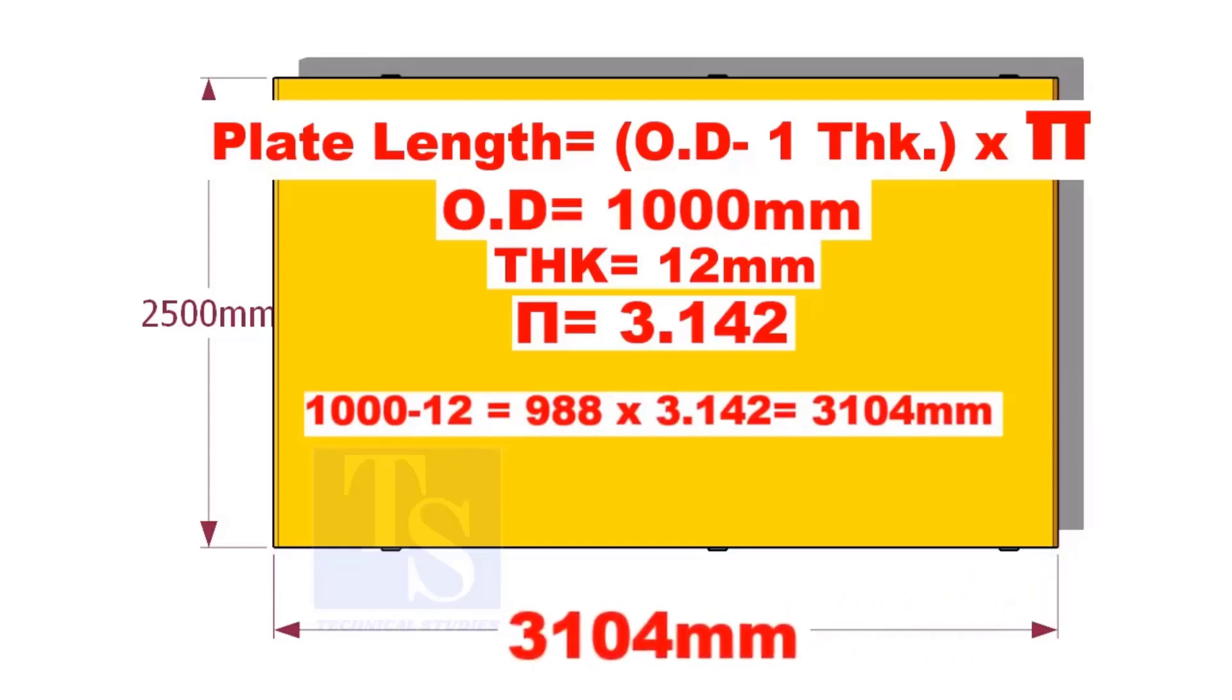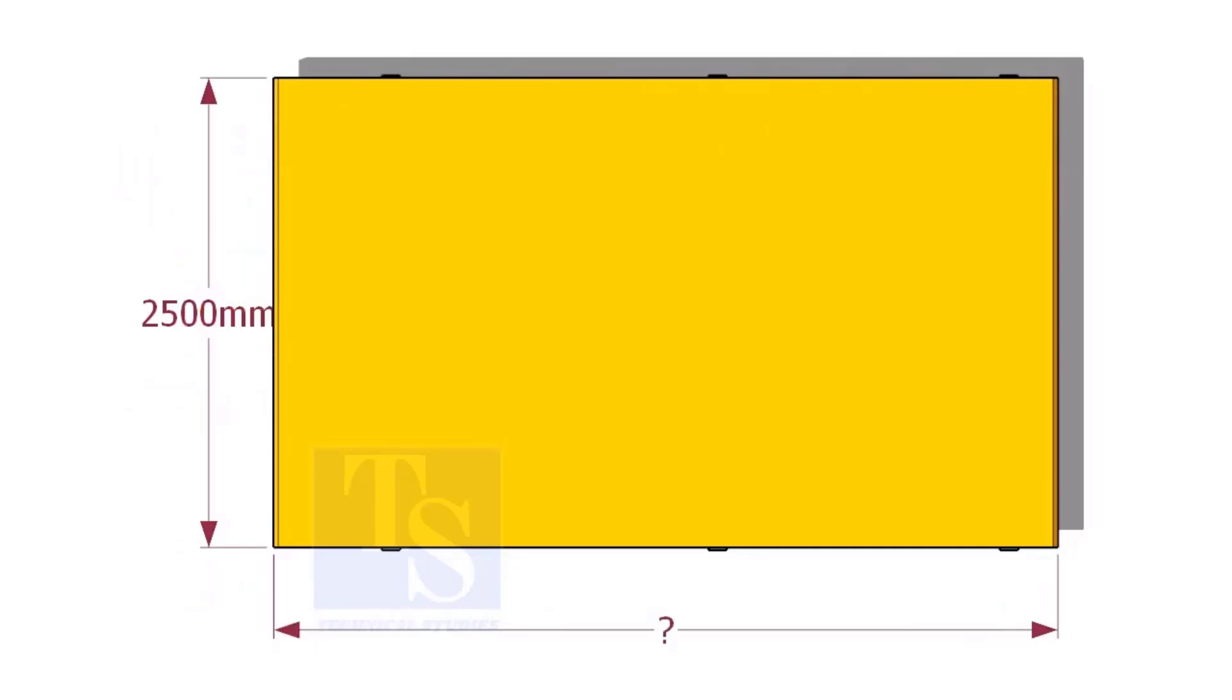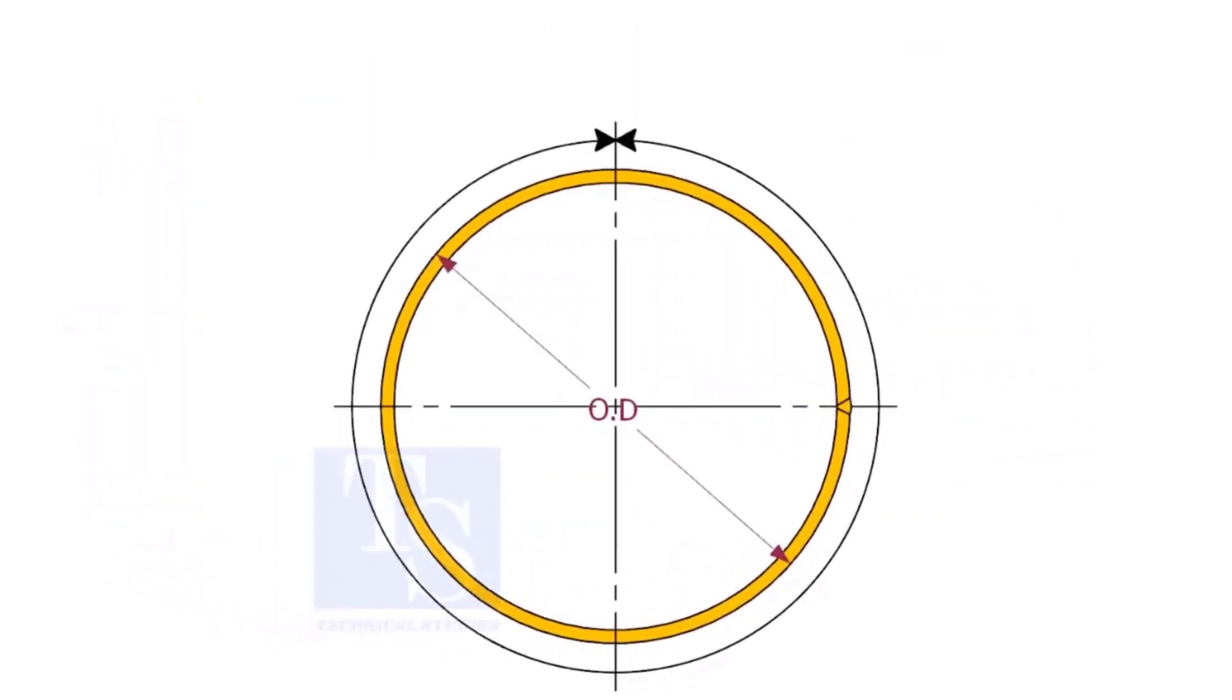If you mark this length on a 12 mm thick plate, after rolling the plate, the outer diameter of the plate will be 1000 mm, and the circumference will be 3142 mm.